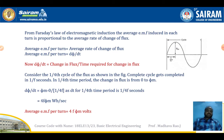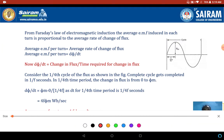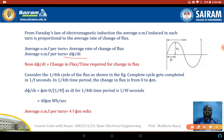From Faraday's law of electromagnetic induction, the average EMF induced in each turn is proportional to the average rate of change of flux. That is, average EMF per turn equals the average rate of flux, which is dφ/dt — meaning change in flux divided by time required for that change.